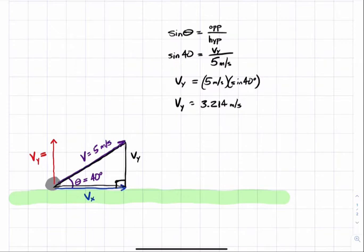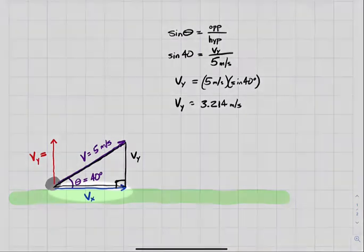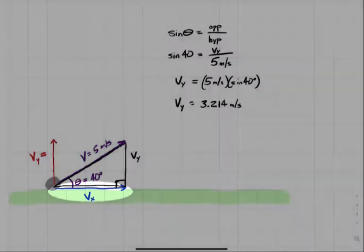What if I want to know the velocity in the x direction? Well, remember, the cosine function gives us the adjacent side divided by the hypotenuse. Adjacent means next to. So I'll find out about Vx, the side next to the 40 degree angle, using cosine.